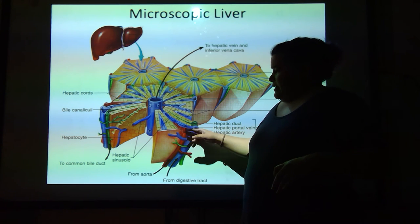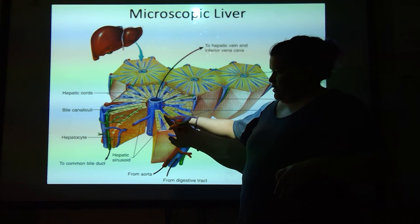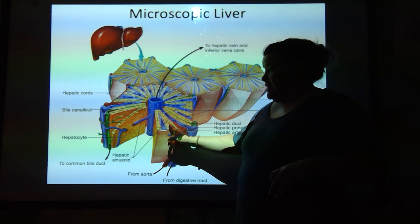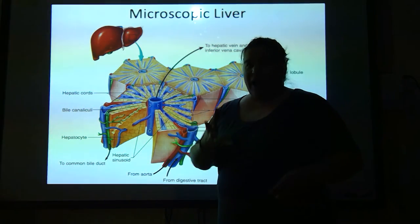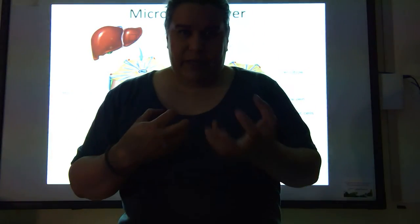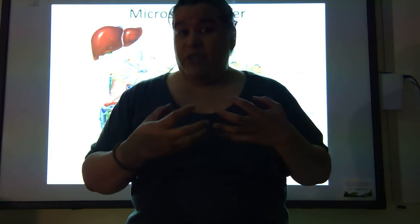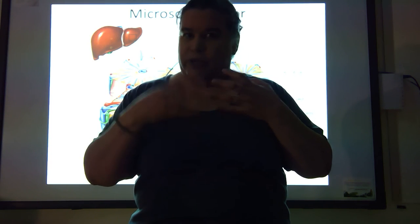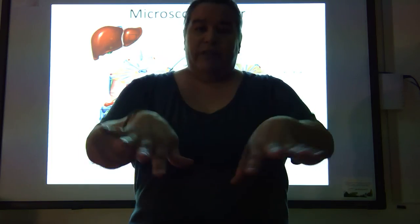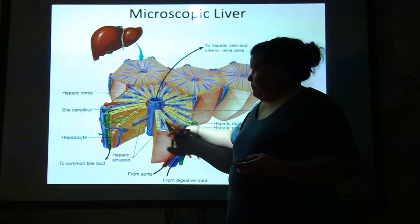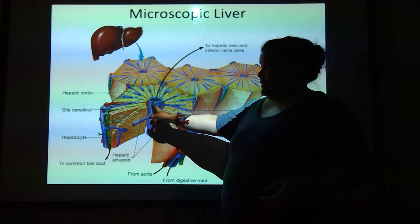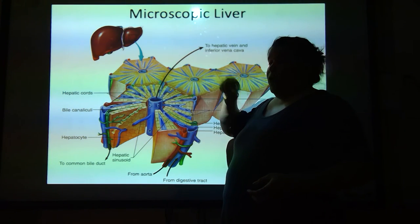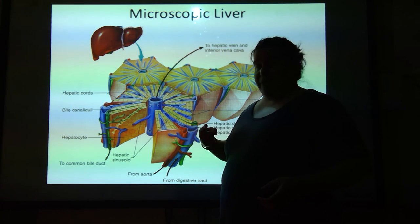As this comes in, notice that these two things merge together and they're going right in between the cells. So these cells that are right next to this are actually pulling stuff out of it, like oxygen and some of the nutrients that may need to be processed. And then if they process that nutrient and don't need it for themselves, they'll dump it back in. When that happens, that product goes to this central vein and ends up going back into general circulation around the body.